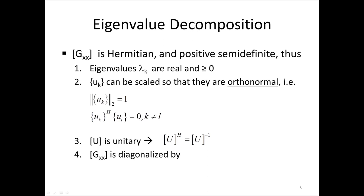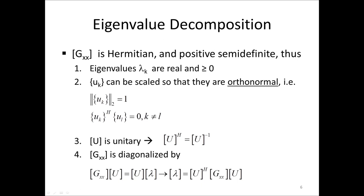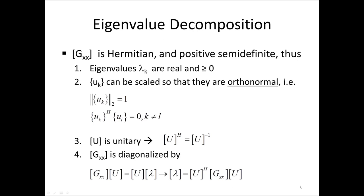The Hermitian matrix GXX is diagonalized by GXX times U equals U times lambda, where lambda is the diagonal eigenvalue matrix. This can also be expressed as lambda equals U Hermitian transpose times GXX times U, by multiplying by U Hermitian transpose from the right. Thus, the eigenvectors diagonalize a Hermitian symmetric matrix.